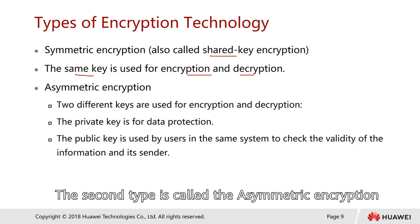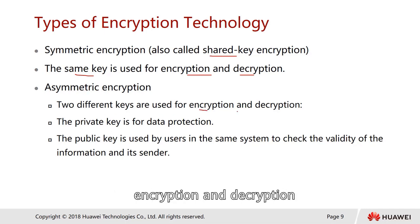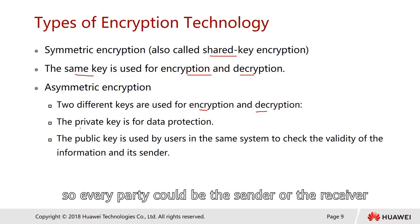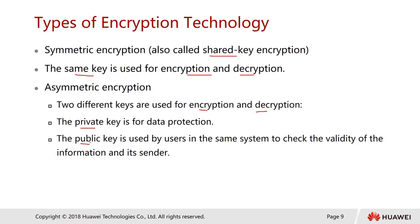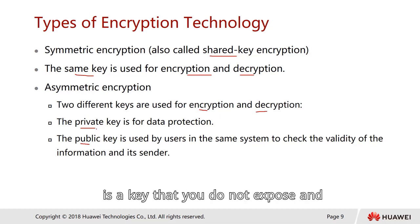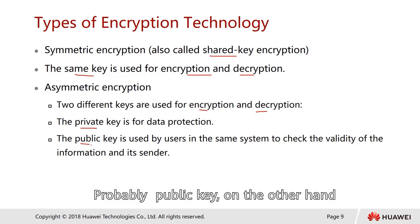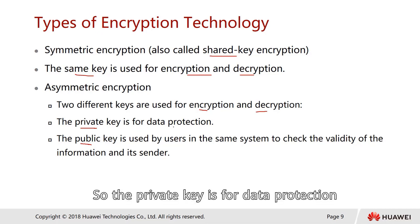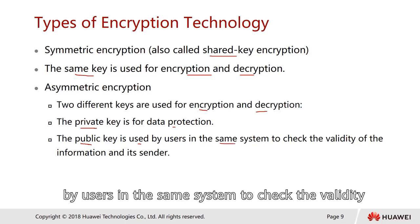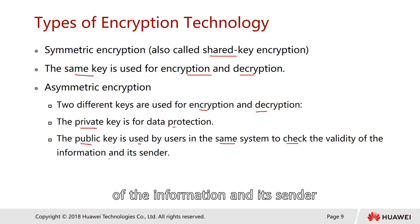The second type is called asymmetric encryption, where two different keys are used for encryption and decryption. This is also known as public key infrastructure. Each party — sender or receiver — generates a pair of keys: a public key and a private key. The private key is never exposed or shared with anyone. The public key can be openly visible to anyone over the internet. The private key is for data protection, and the public key is used to check the validity of the sender's information.